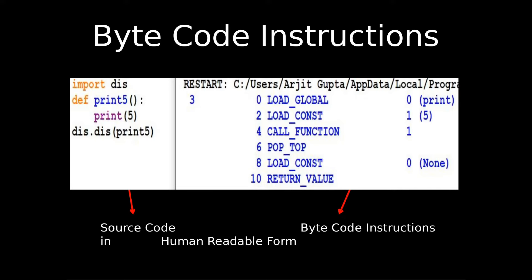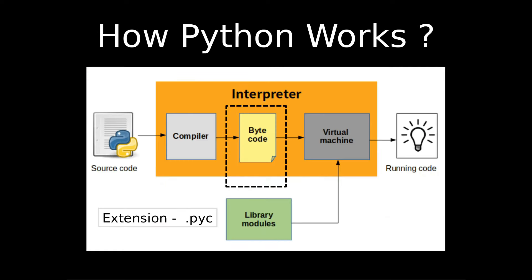The disassembler converts bytecode into human-readable form — it is not given to the machine, it's for us. On the left side of the image I've written source code: I import the disassembler module, define a function print_5 that prints the number 5, and call it passing print_5 as a parameter. On the right side, you can see the disassembler output: instructions like LOAD_GLOBAL and LOAD_CONST — these are the bytecode instructions in readable form.